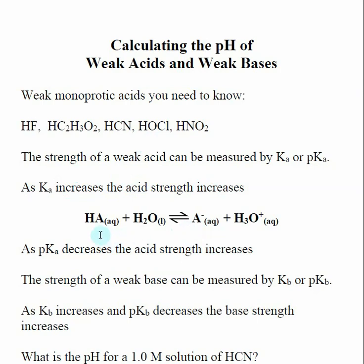And this makes sense. If you look at this generic acid equation, we realize that as Ka increases, the equilibrium is going to be pushed farther to the right, which means that we're going to have a higher concentration of hydronium. And so that's what we mean when we say one acid is stronger than the other. It means it produces a higher concentration of hydronium.